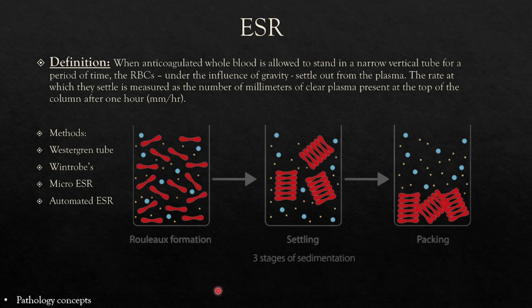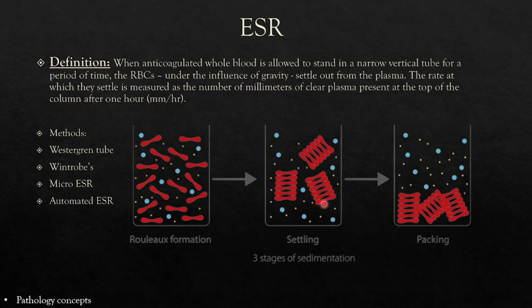ESR — erythrocyte sedimentation rate — is a common hematologic test that may indicate and monitor increased inflammation activity within the body caused by conditions such as autoimmune disease, infection, or tumor. Definition: when anticoagulated whole blood is allowed to stand in a narrow vertical tube, RBCs under the influence of gravity settle down from the plasma. The rate at which they settle is measured as the number of millimeters of clear plasma at the top of the column after one hour. Unit: mm/hour. Methods include the Westergren method, Wintrobe method, micro-ESR, and automated ESR. The three stages of sedimentation are rouleaux formation, settling of rouleaux, and packing of rouleaux.